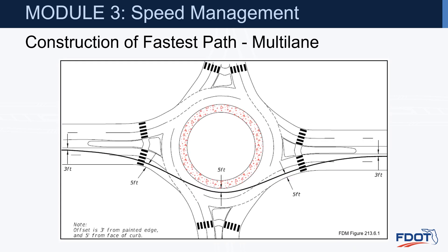For multi-lane fastest path construction, it's very similar to single lanes — all of the same offsets and dimensions apply. The only difference is that we are ignoring all pavement markings on the approach, circulating, and exiting. Essentially, if you were a race car driver going through this multi-lane roundabout as fast as you can, you'd be cutting corners as much as possible to get through as quickly as possible.